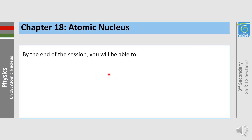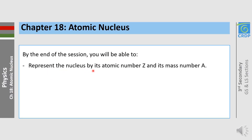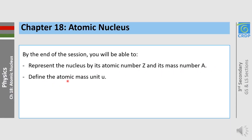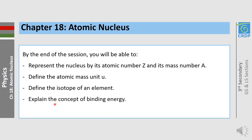By the end of this session you will be able to represent the nucleus by its atomic number Z and its mass number A, define the atomic mass unit U, define the isotope of an element, explain the concept of binding energy, and explain the stability of the nucleus.